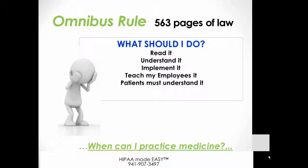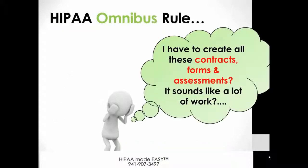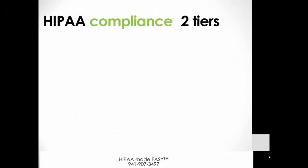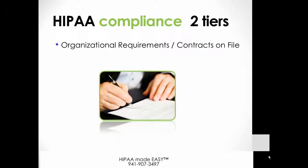The Omnibus Rule is 563 pages of law. You could read it, understand it, implement it, teach your employees to understand it, and then have them explain it to your patients — but when would you practice medicine? You don't have to create all the contracts, forms, and assessments yourself. That would be a lot of work. And after all, this is HIPAA Made Easy. So we provide two tiers to your HIPAA compliance.